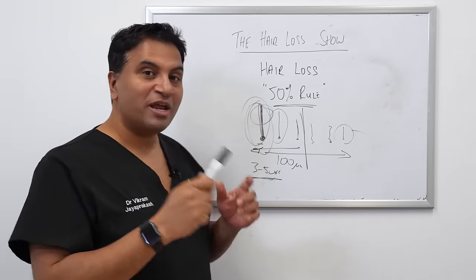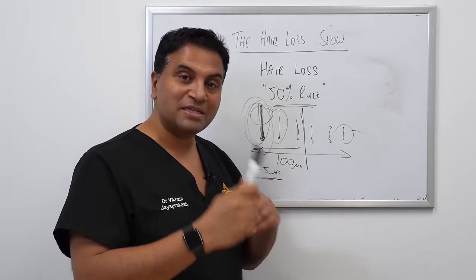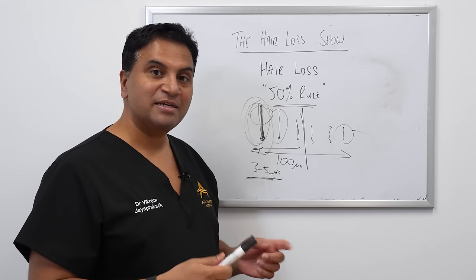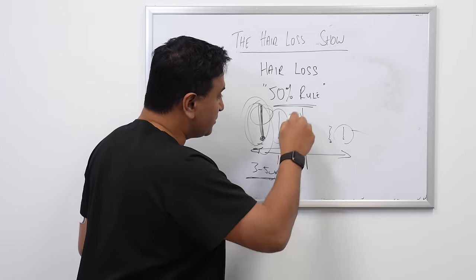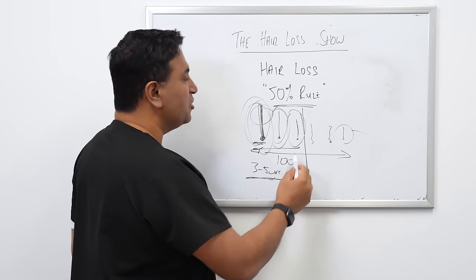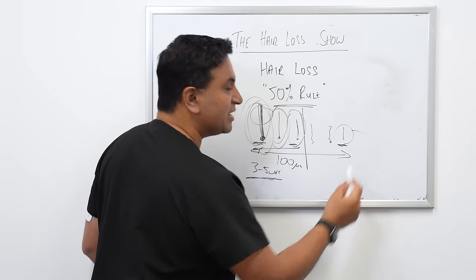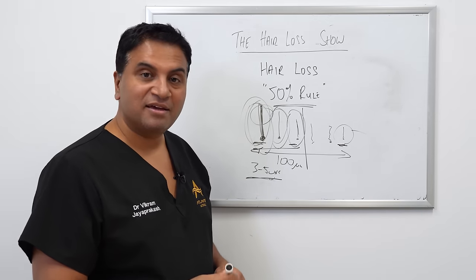So it's not that every hair on the head is at this position or at this position. You may get some hairs here. You may get some hairs here. You may get some hairs that are at that part of their cycle.